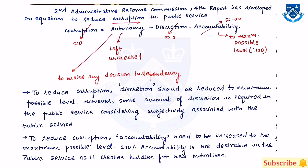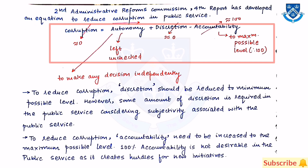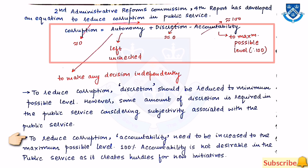The Second Administrative Reforms Commission's fourth report developed an equation to reduce corruption in public service: Corruption equals autonomy plus discretion divided by accountability. To reduce corruption, discretion should be reduced to the minimum possible level and accountability should be increased to the maximum possible level. However, 100% accountability is not desirable in public service as it creates hurdles for new initiatives.